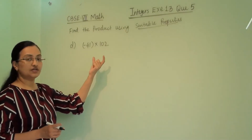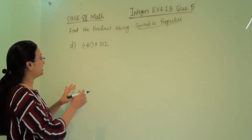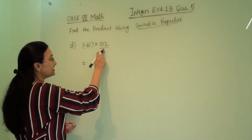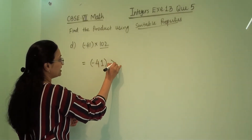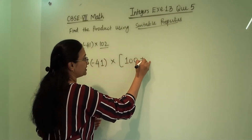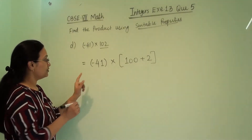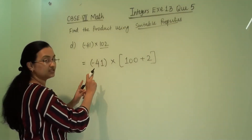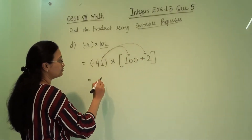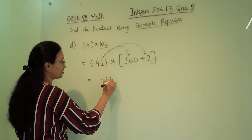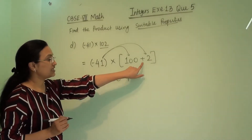Next numerical: (-41) × 102. Here we use the distributive property of multiplication and convert 102 into 100 + 2. So it becomes (-41) × (100 + 2). We multiply -41 with 100 first, giving -4100. Then plus will come because there is a plus sign in the bracket.